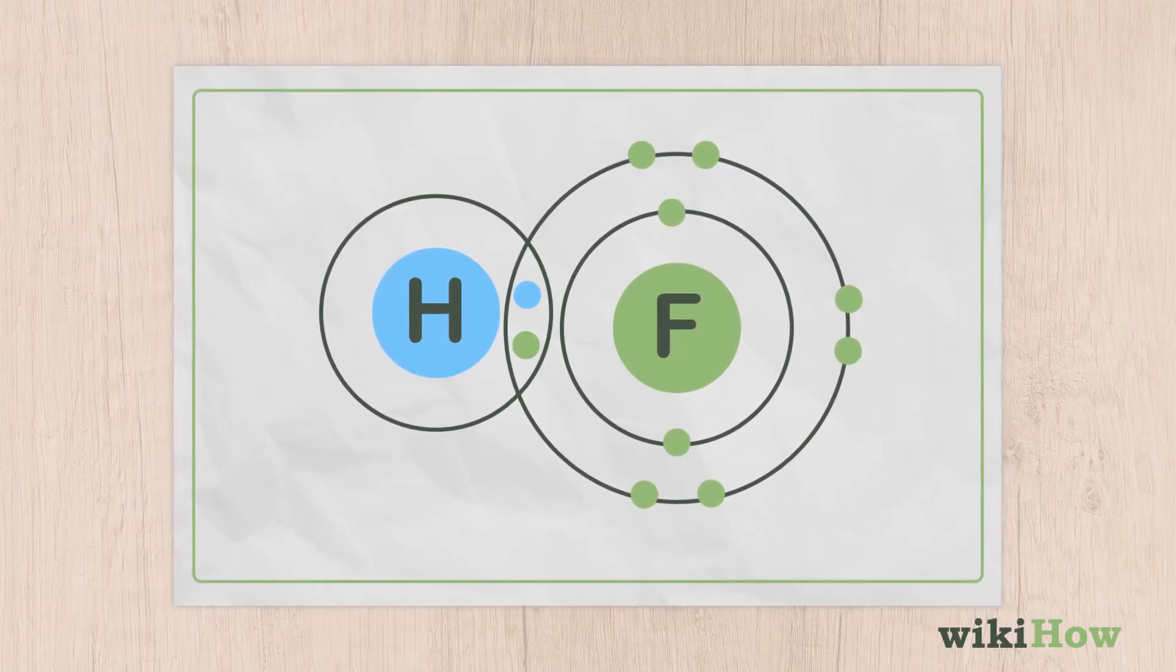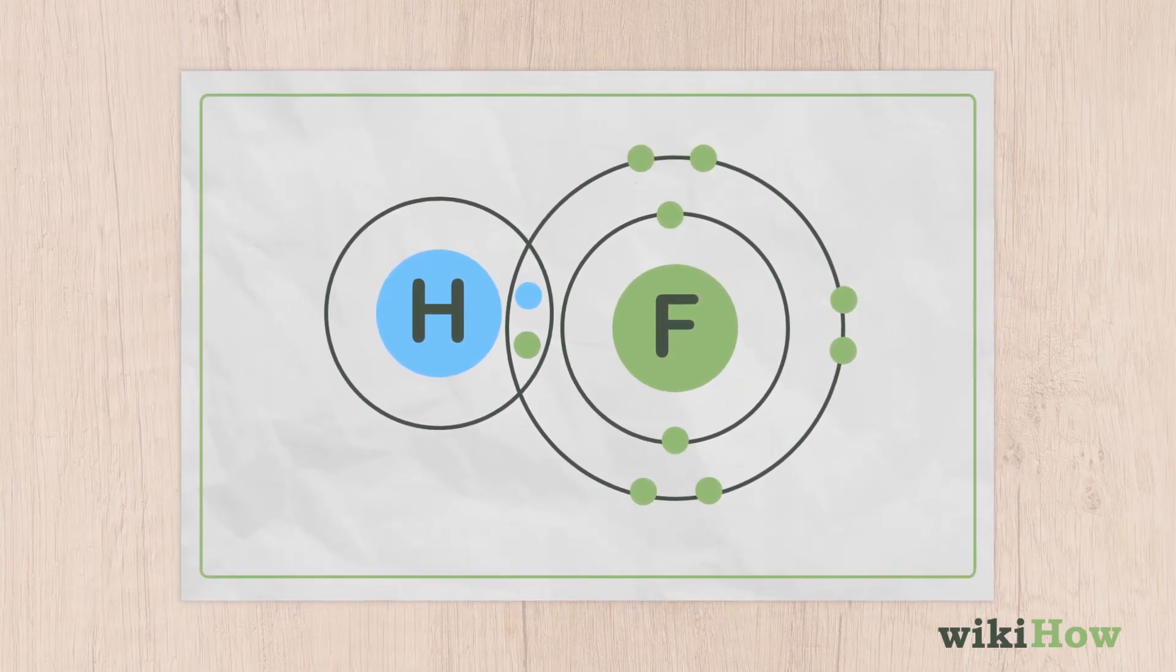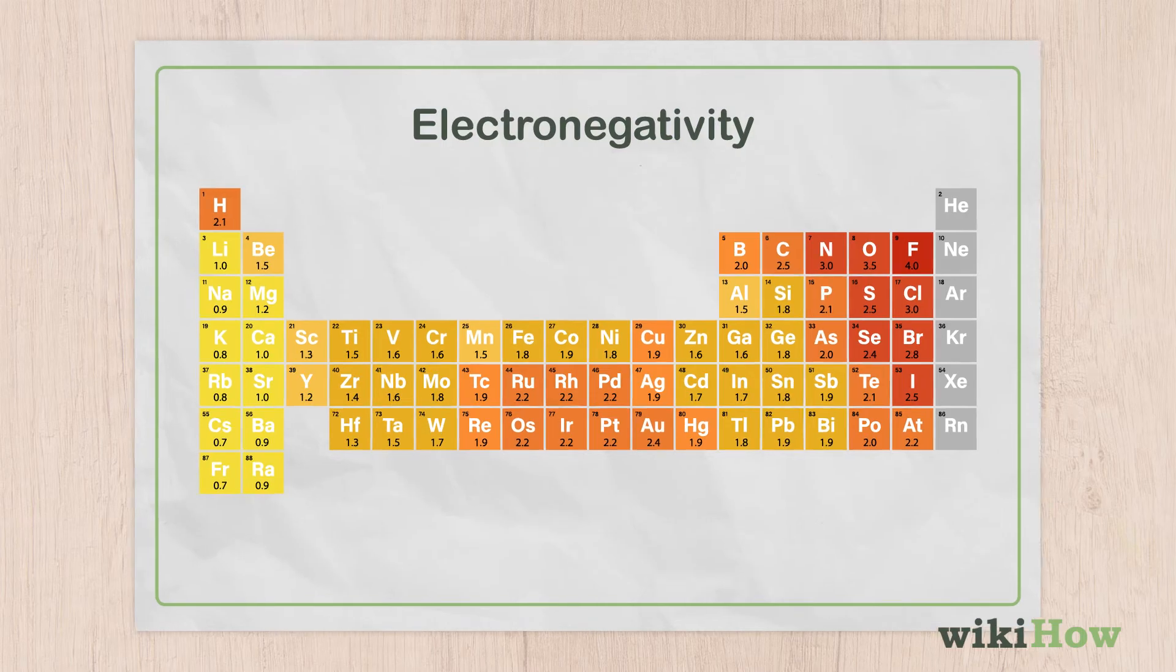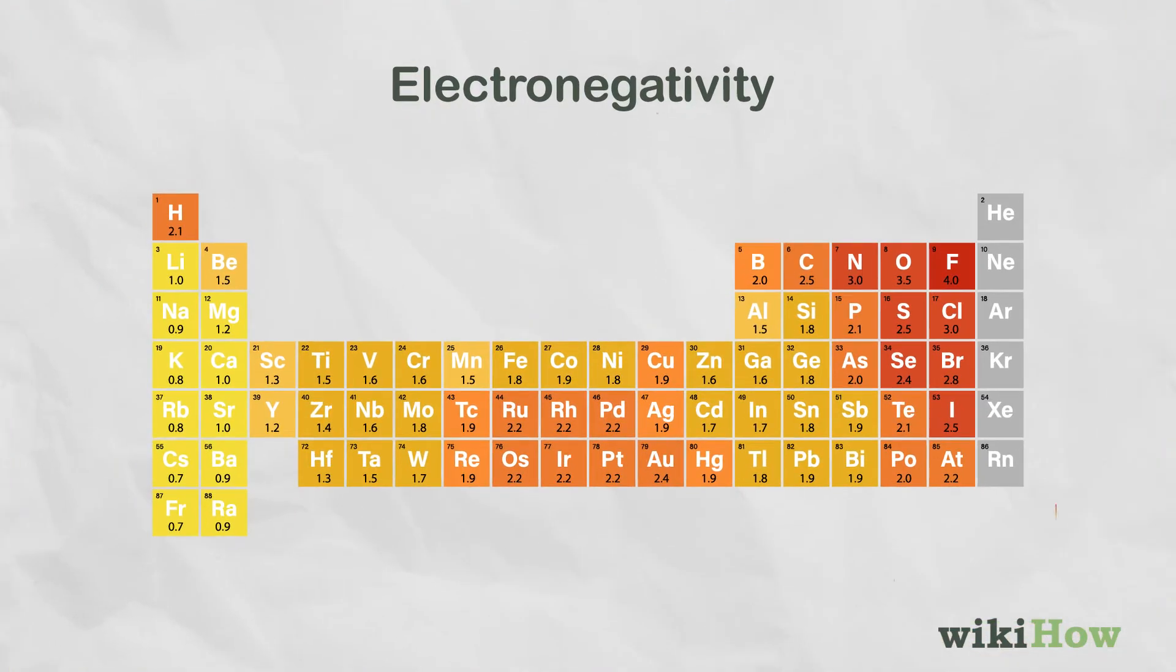To understand the nature of a bond between two atoms, look up the electronegativity of each atom on an electronegativity table or a periodic table that lists electronegativity. Keep in mind that electronegativity gets higher as you move up and to the right on the chart.